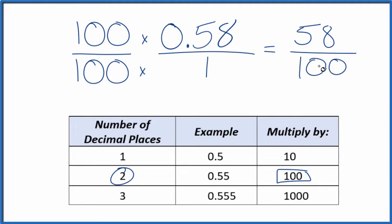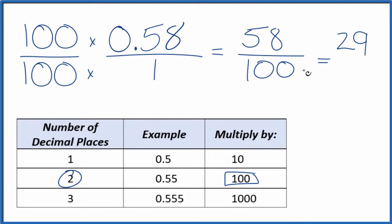We can reduce this further, though. These are even numbers. If we divide 58 by 2, we get 29. If we divide 100 by 2, we get 50. So the decimal 0.58, that's equal to 29 over 50. You divide 29 by 50, or 58 by 100, you'll get 0.58.